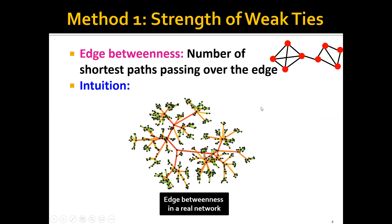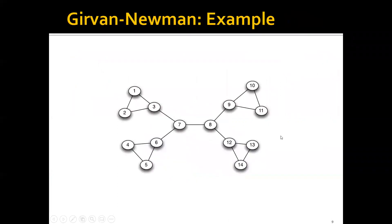Intuitively, if we have a large network and calculate the betweenness of every edge, we can see that an edge in the middle has a very high betweenness, indicating that it is actually a weak tie in this network. It therefore makes sense for us to remove this edge and split this large network into two communities.